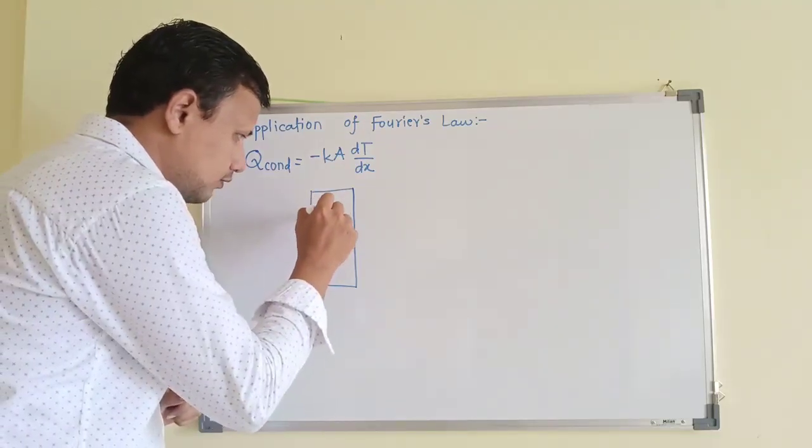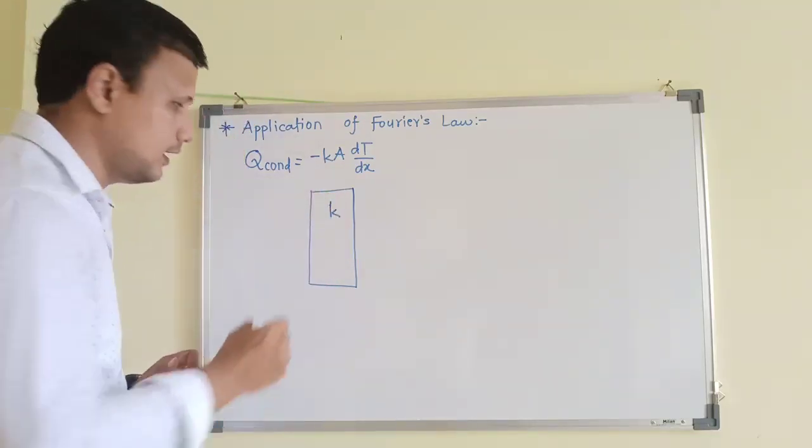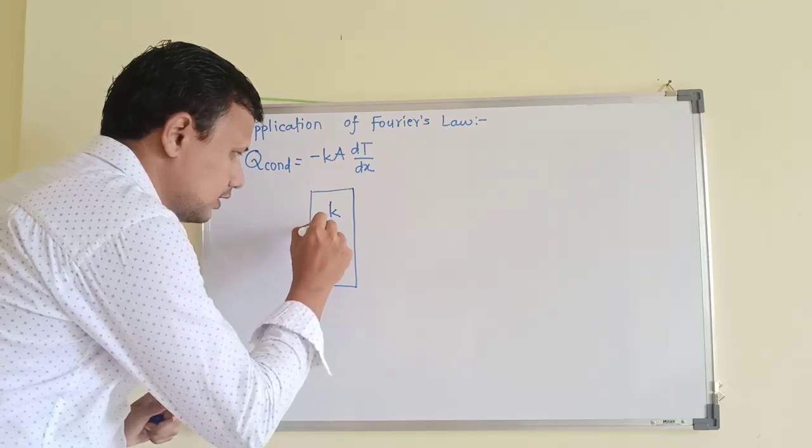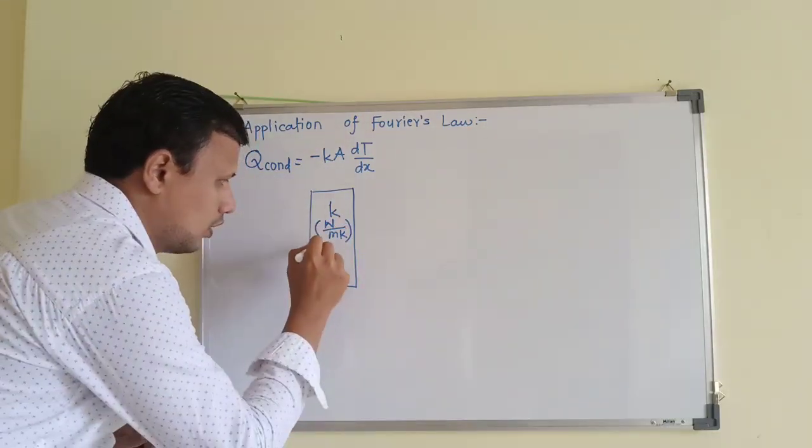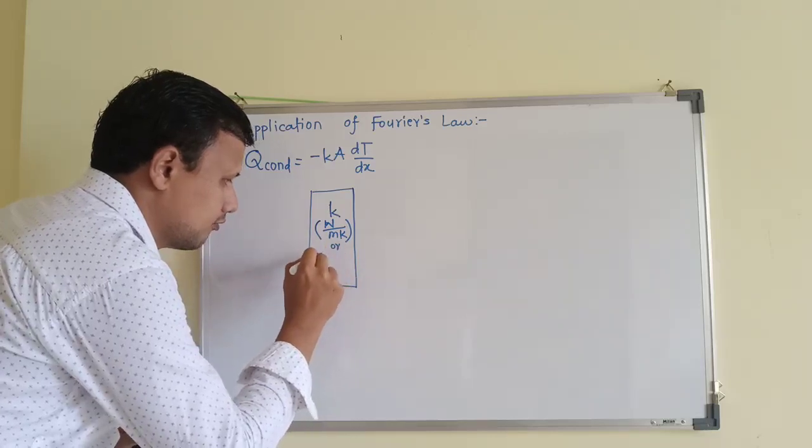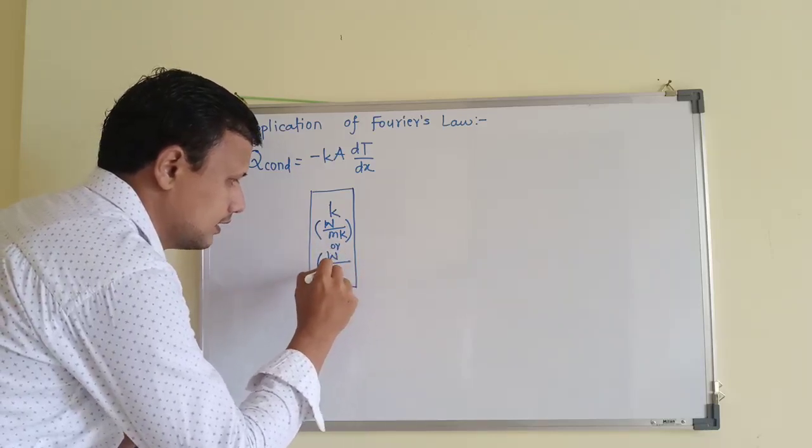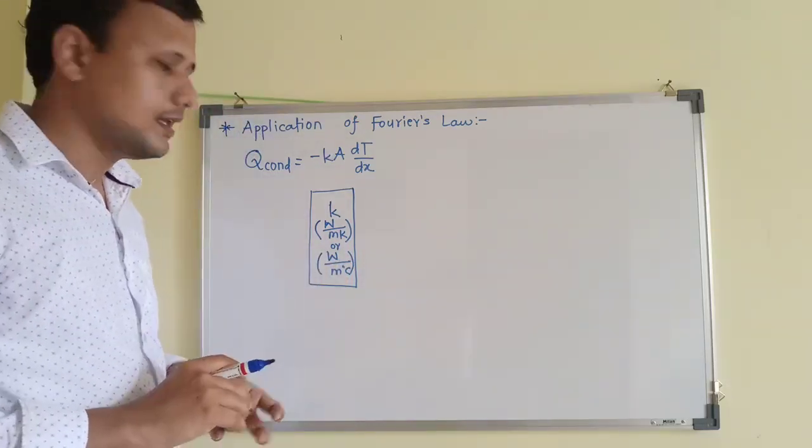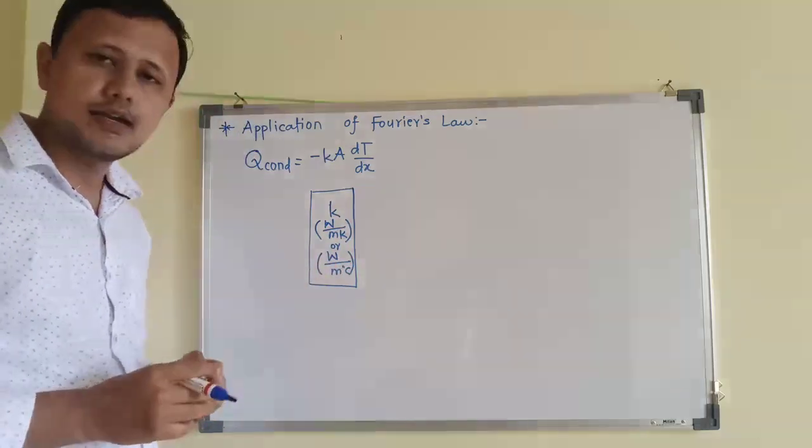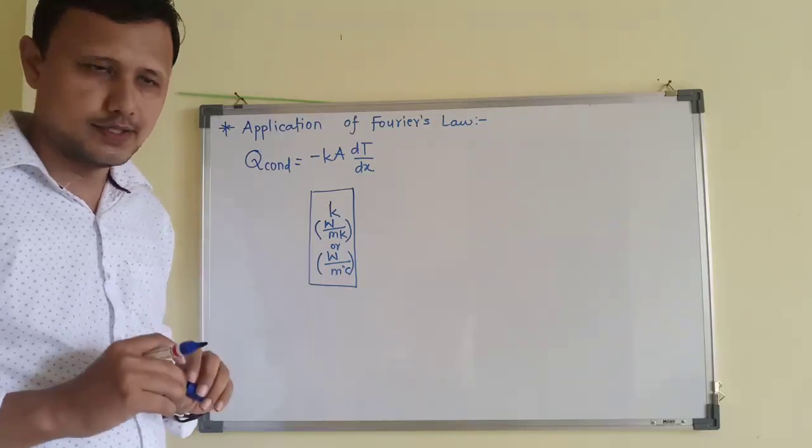The material of the plane wall is having thermal conductivity k and as we know its unit will be Watt per meter Kelvin or its unit will be Watt per meter degree Celsius. We already have developed an understanding that both of these units are equivalent. There is no difference in them.